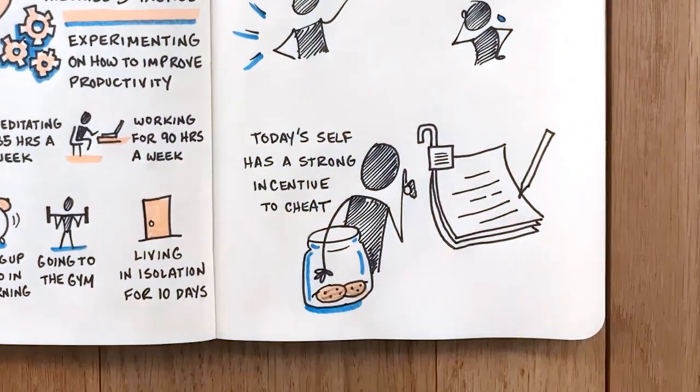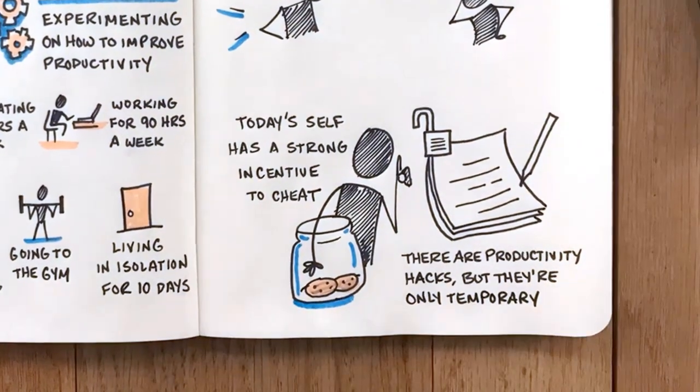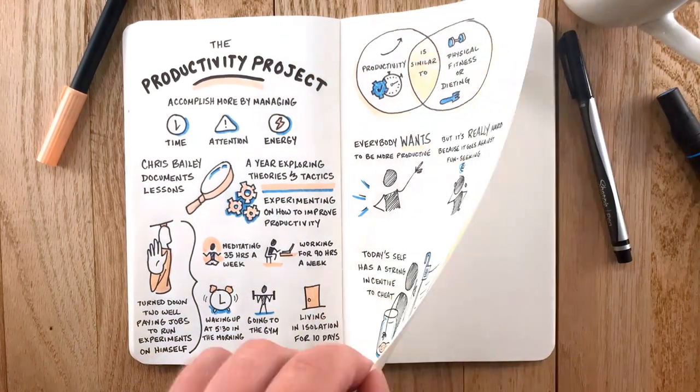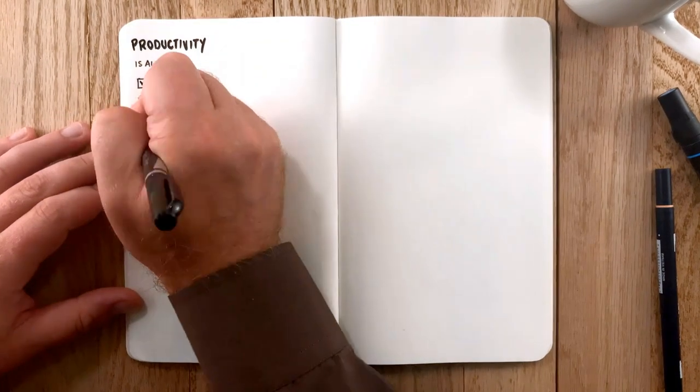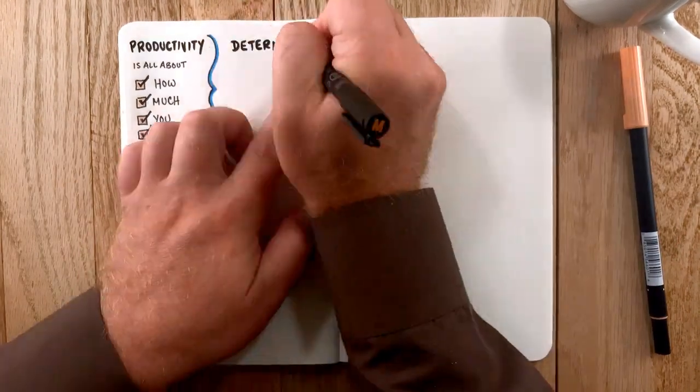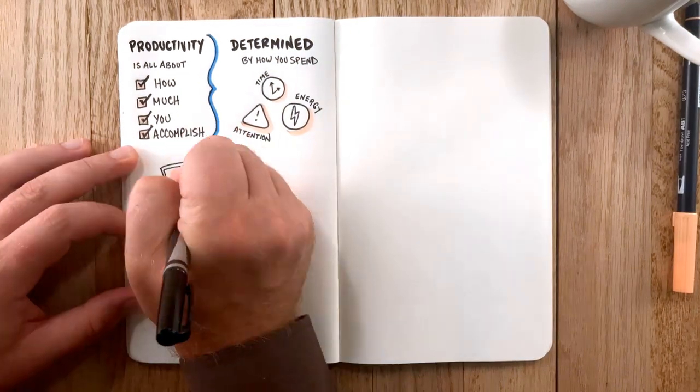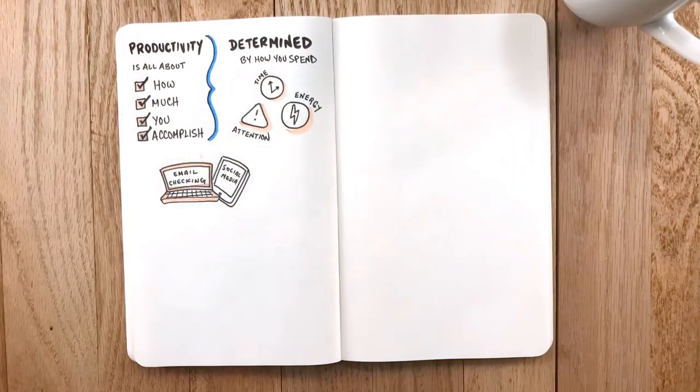Productivity is all about how much you accomplish, and it's determined by how you spend your time, attention, and energy. The constant email checking, social media, and multitasking make you feel productive when in fact you're giving in to distractions.